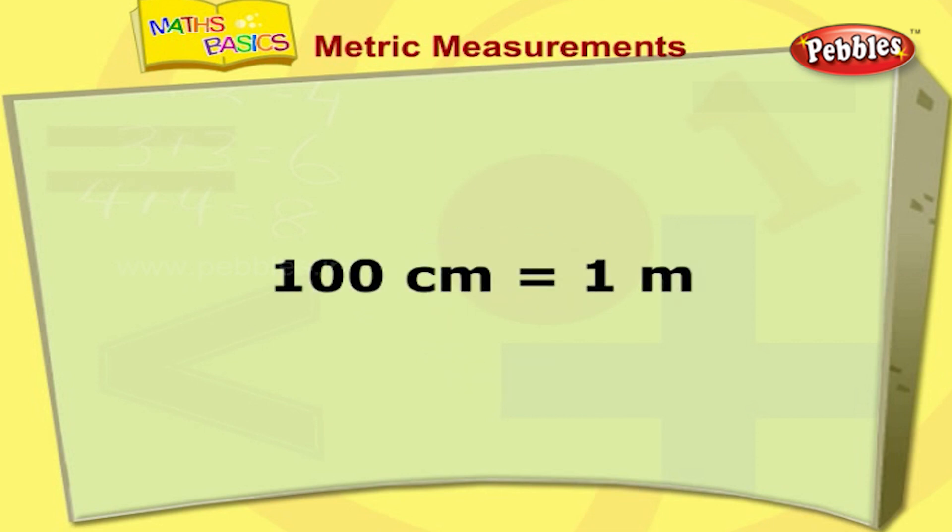100 centimeters is equal to 1 meter. 1000 meters is equal to 1 kilometer.